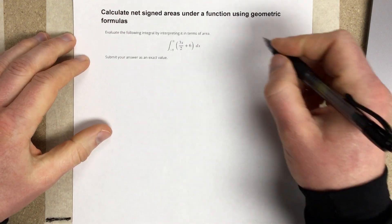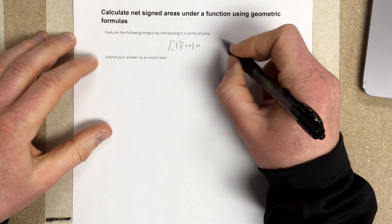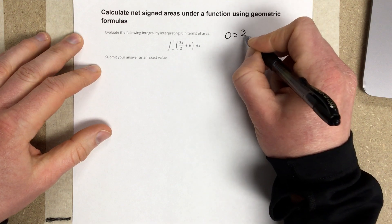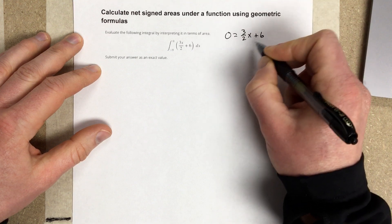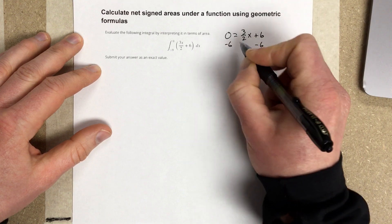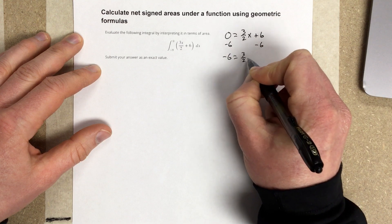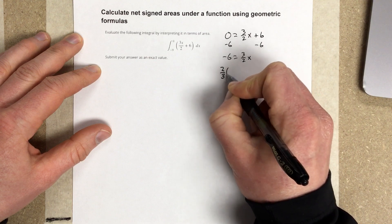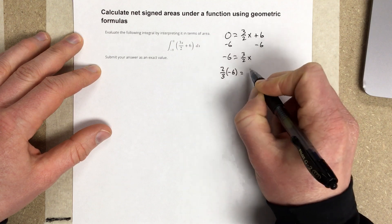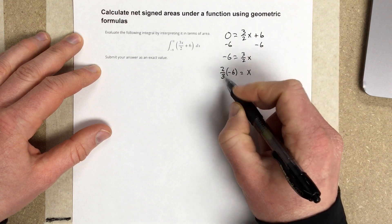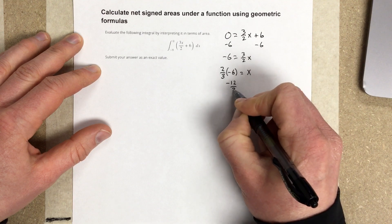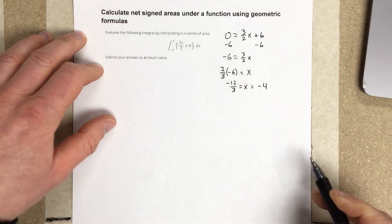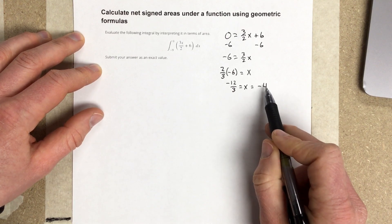So the first thing I'm going to do is find out the zeros or the x-intercepts for this function. So I'm going to say 0 equals 3/2 x plus 6. Subtract the 6 on each side. Negative 6 equals 3/2 x. I'm going to multiply both sides by 2/3. So 2/3 times negative 6 equals x. So I get negative 12 over 3, which is x, which is negative 4. So my only x-intercept is negative 4.